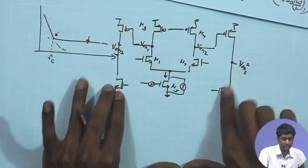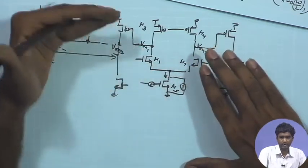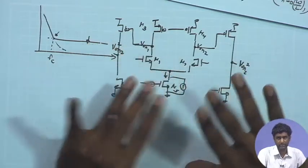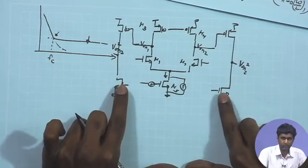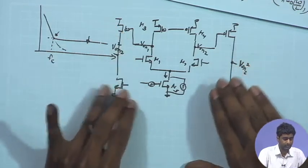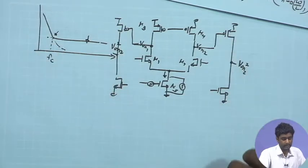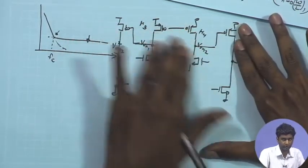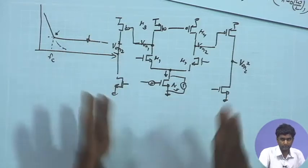We should ensure the second stage noise doesn't degrade too much, but generally this won't happen given design constraints with comparable W/L and bias current. We can actually save some power in the second stage by allowing lower bias current, since it's not noise critical. We're mostly focusing on the first stage for minimization of 1/f noise.